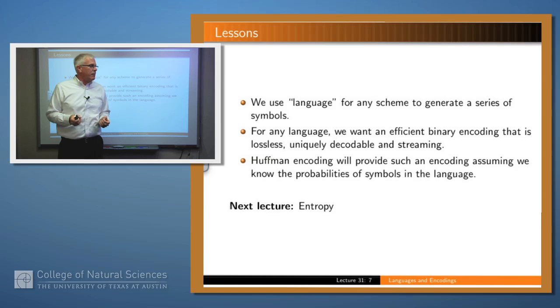So what have we said? We use the word language to describe any scheme for generating a sequence of symbols or strings of symbols. And for any language, what we want is to be able to find an efficient binary encoding which has three properties. It has to be lossless, uniquely decodable, and streaming. And Huffman encoding will provide such an encoding for us, but you have to know the probabilities of the various symbols of the language. Thank you.